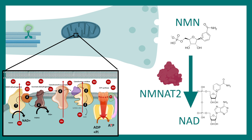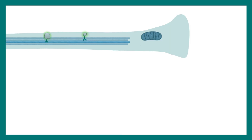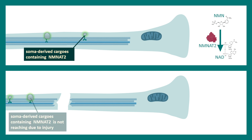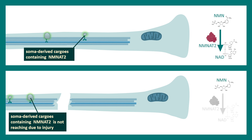NMNAT2 is a very short-lived enzyme, meaning it has to be produced continuously by the cell body and transported to the axons. This axonal transport of soma-derived NMNAT2 is super important for neuronal functionality. Now imagine a situation when there is an injury in the axon — NMNAT2 cannot reach the synaptic terminal because there is a path break. So at the synaptic terminal, there would be no conversion of NMN into NAD, and this cellular deprivation of NAD leads to several problems from an energy point of view.